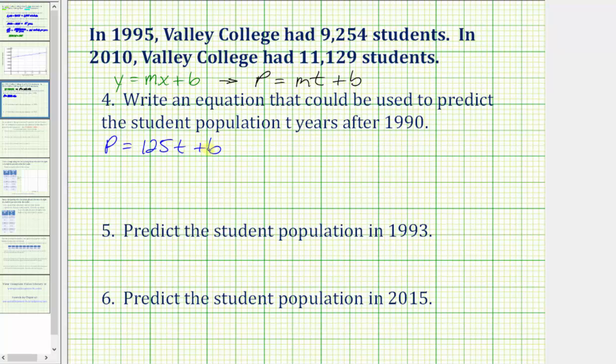But we still have to find b, the vertical intercept, by using the given information. To do this, we'll write the given information as ordered pairs in the form t comma p, where t is the number of years after 1990, and p is the student population. Because 1995 is five years after 1990, one ordered pair would be (5, 9254). The second ordered pair for 2010, because 2010 is 20 years after 1990, would be (20, 11129). Now we can use either of these ordered pairs, perform substitution into our equation, and then solve for b.